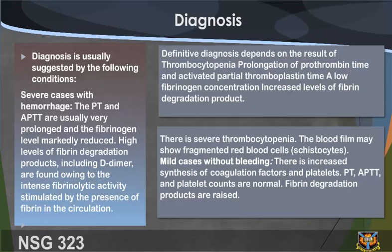Diagnosis is usually suggested by the following conditions. In severe cases with hemorrhage, the PT and APTT are usually very prolonged and the fibrinogen level markedly reduced. High levels of fibrin degradation products including D-dimer are found owing to the intense fibrinolytic activity stimulated by the presence of fibrin in the circulation. Definitive diagnosis depends on the results of thrombocytopenia, prolongation of prothrombin time and activated partial thromboplastin time, and low fibrinogen concentration. There is severe thrombocytopenia and the blood film may show fragmented red blood cells.